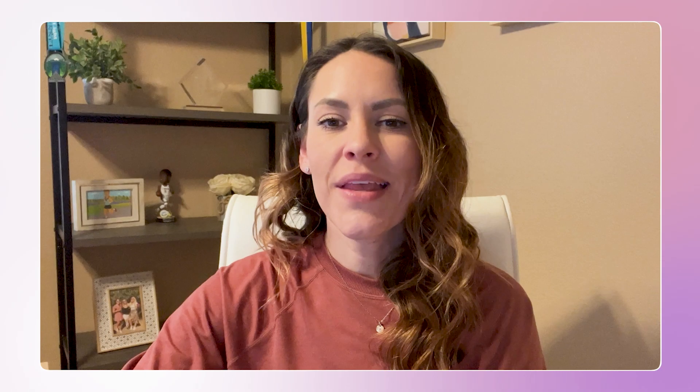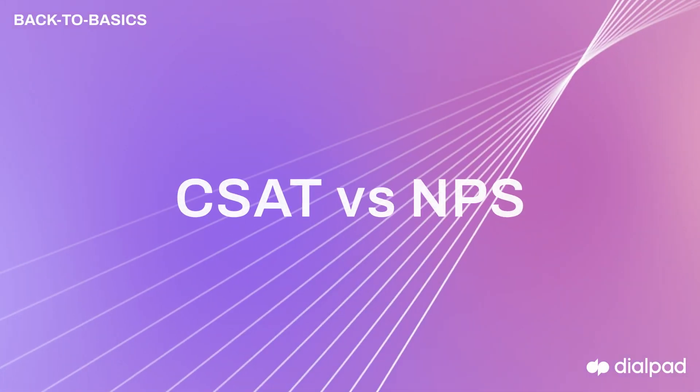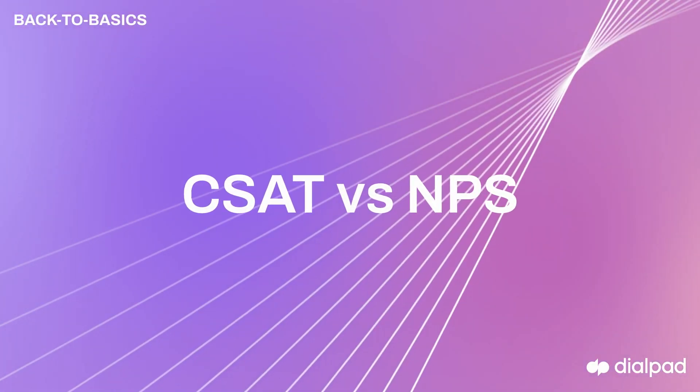For example, let's say you surveyed 100 customers and 60 of them said they were satisfied or very satisfied with their experience. After multiplying that by 100, you'll have a CSAT score of 60%.